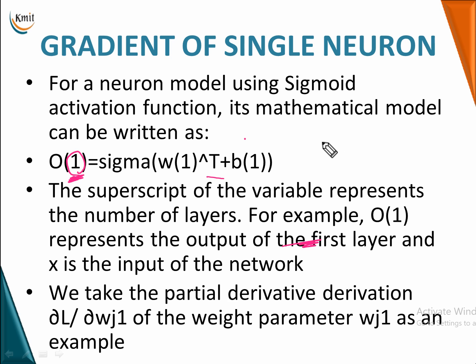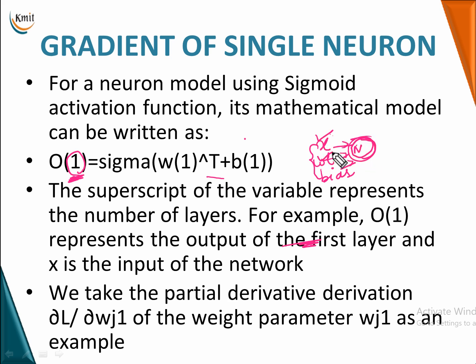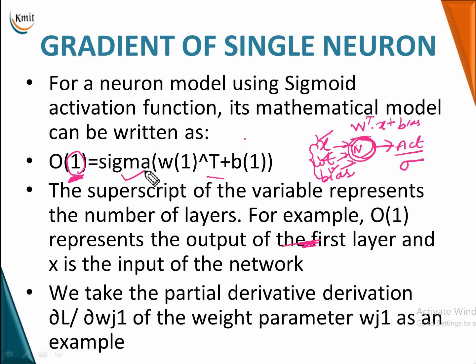When you create a model, you have input X of that particular network. This particular neuron will have its input, its associated weight, and its associated bias. It is going to form a linear relationship: weight into X plus bias. After that, you pass it through a sigmoid activation function, and finally what you get is an output which I am calling OF1. This is how we build a single neuron model.